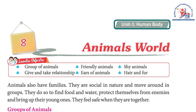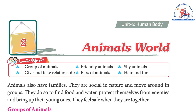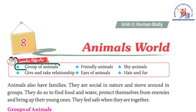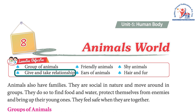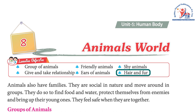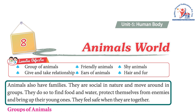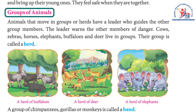Unit 5: Human Body, Chapter 8: Animals World. Learning objectives include groups of animals, friendly animals, shy animals, and give and take relationships. Animals also have families. They are social in nature and move around in groups, doing so to find food and water, protect themselves from enemies, and bring up their young ones. They feel safe when they are together.